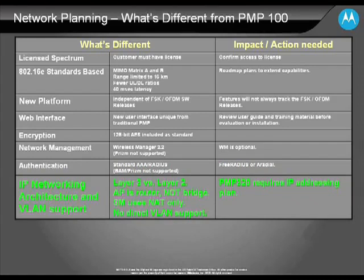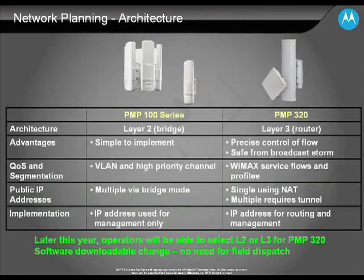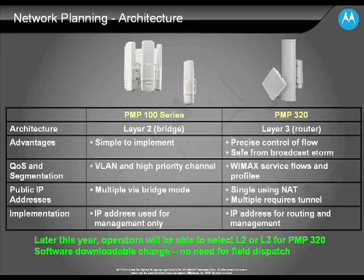Probably the biggest and most noticeable difference is that the PMP320 uses Layer 3 technology, whereas traditional PMP products have used Layer 2. Traditional PMP products operate at Layer 2, meaning the access point and subscriber module both operate as bridges. The PMP320 operates at Layer 3 — sometimes referred to as IP Convergent Sublayer — meaning the access point acts as a router and the subscriber module acts as a NAT device.